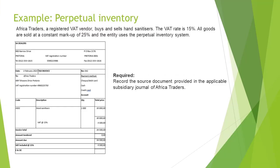So let's look at an example. Africa Traders, a registered VAT vendor, buys and sells hand sanitizers. The VAT rate is 15%. All goods are sold at a constant markup of 25% and the entity uses the Perpetual Inventory System. We are given a source document, which is an invoice that indicates what was purchased, and we are required to record the transaction in the applicable subsidiary journal of Africa Traders.